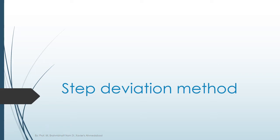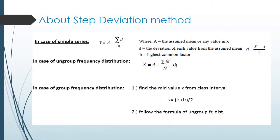Welcome to the new episode of Statistical Computing. In this session I am going to discuss the step deviation method to find arithmetic mean. Step deviation method is one step ahead of the assumed mean method — if the deviated value of x from its assumed mean capital A, meaning d equals x minus A, has some common factors, then it is better to divide the value of d by its highest common factor h.